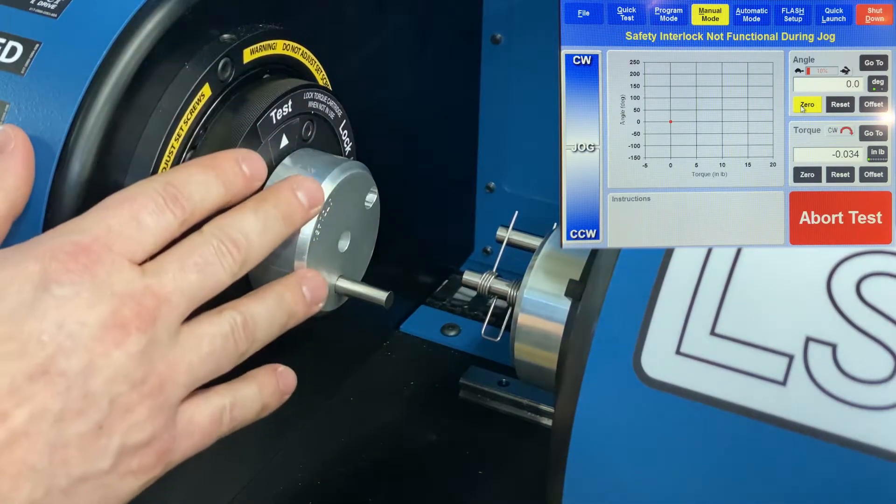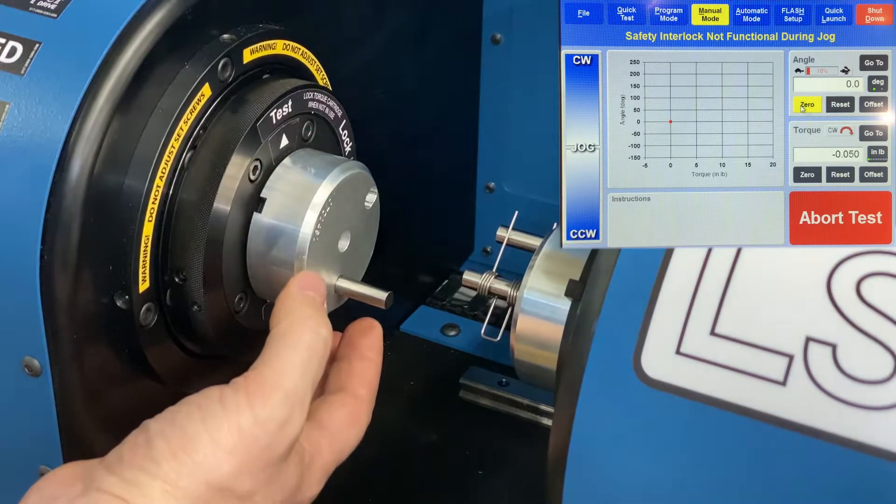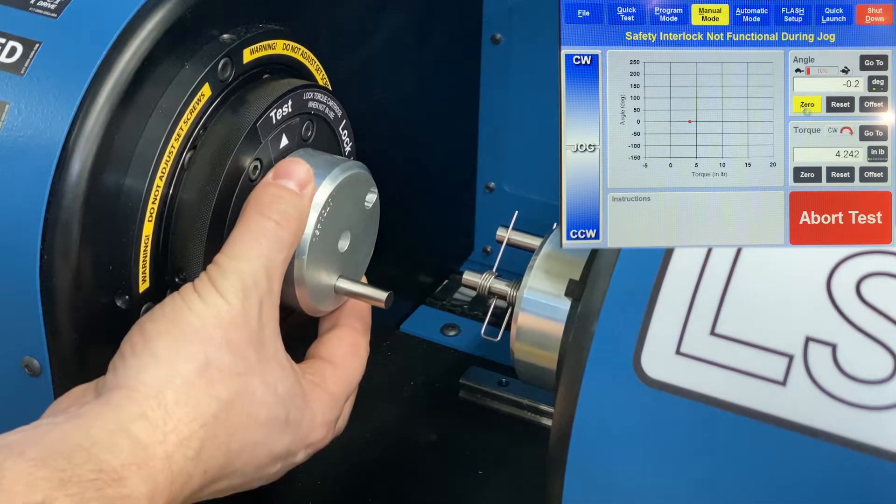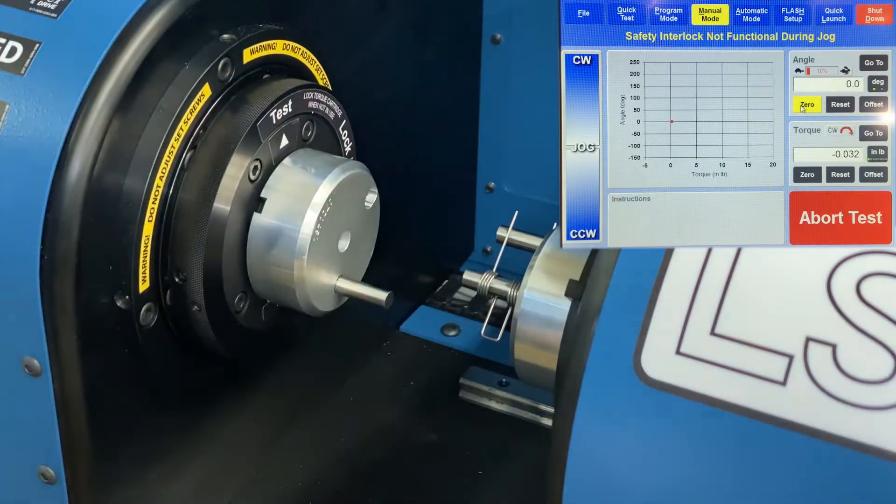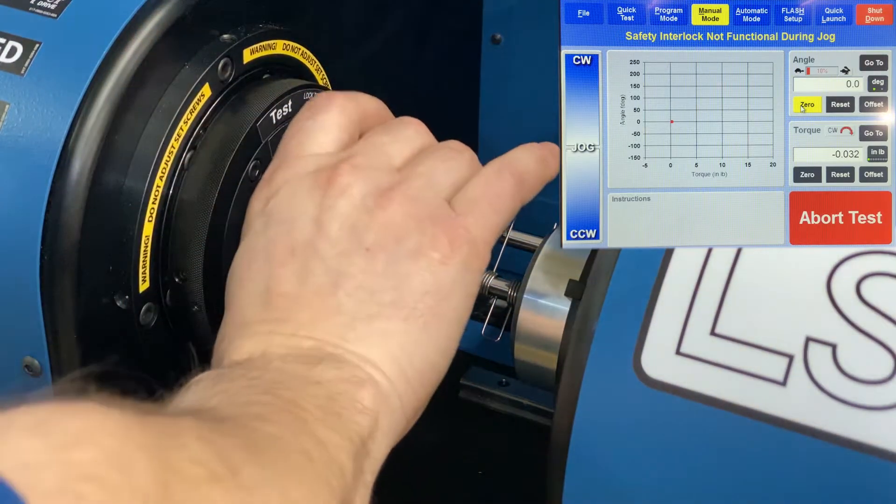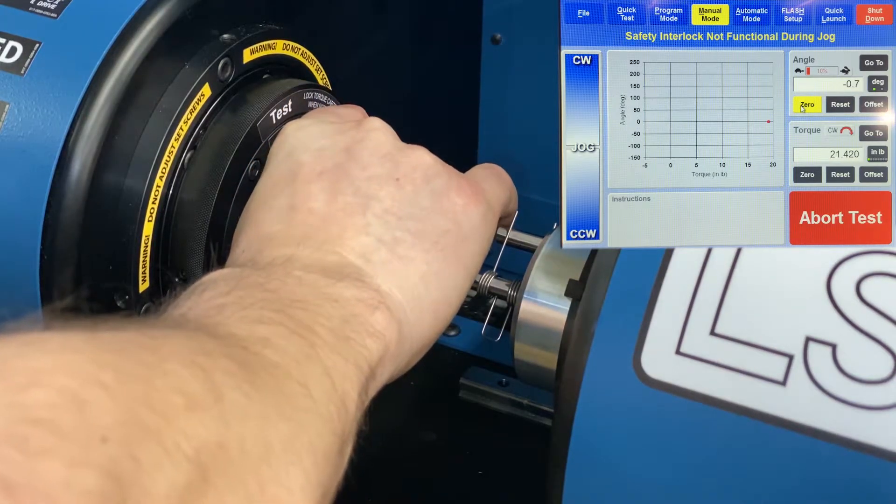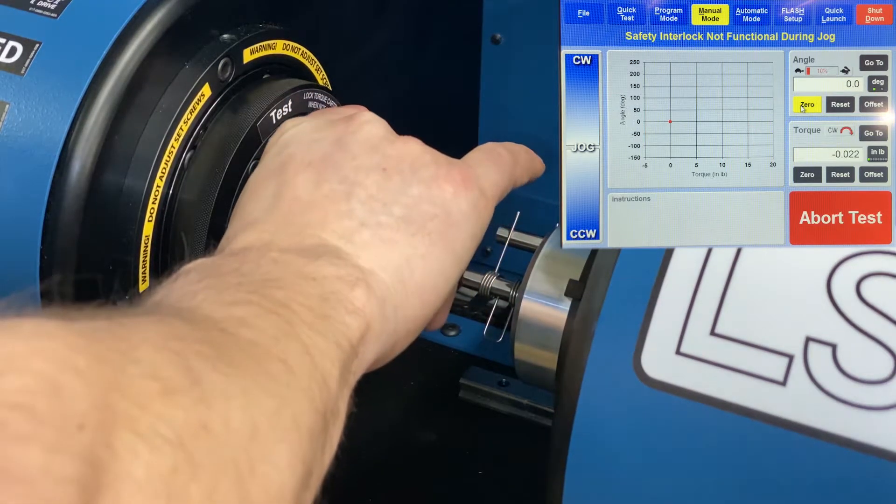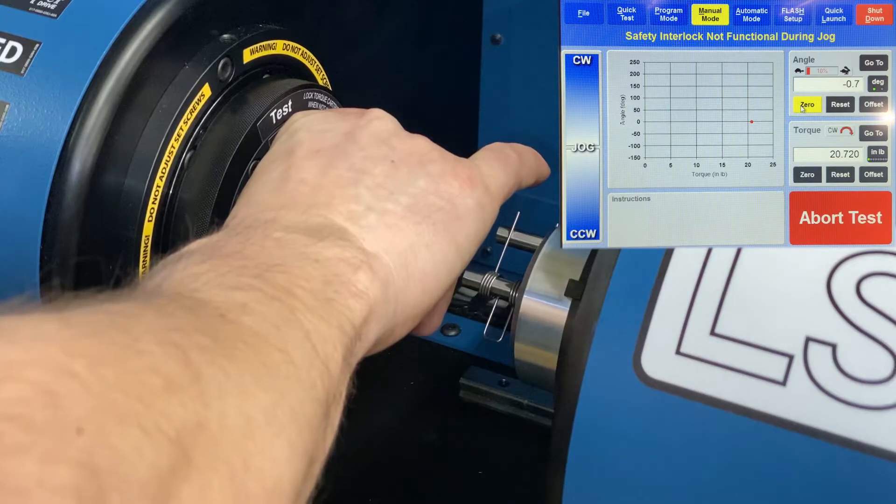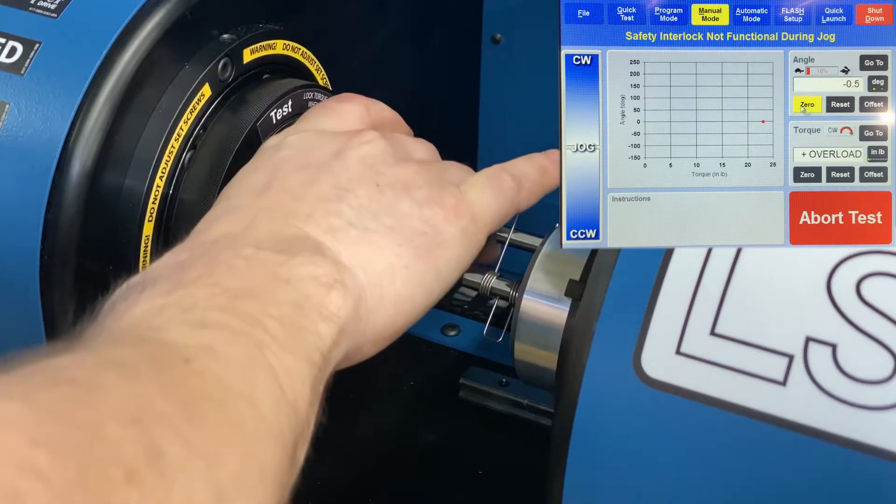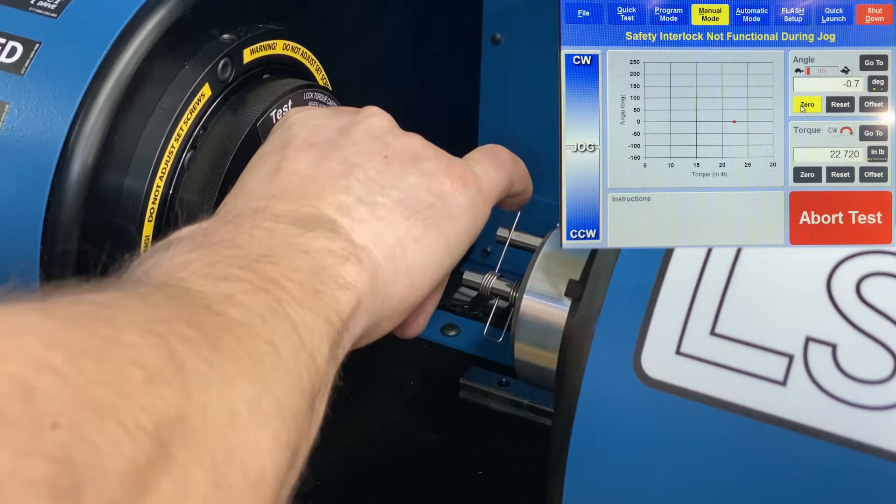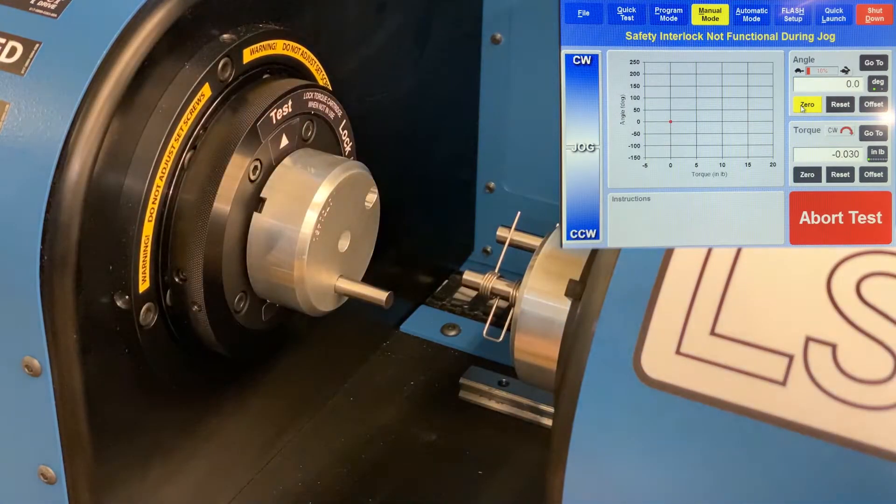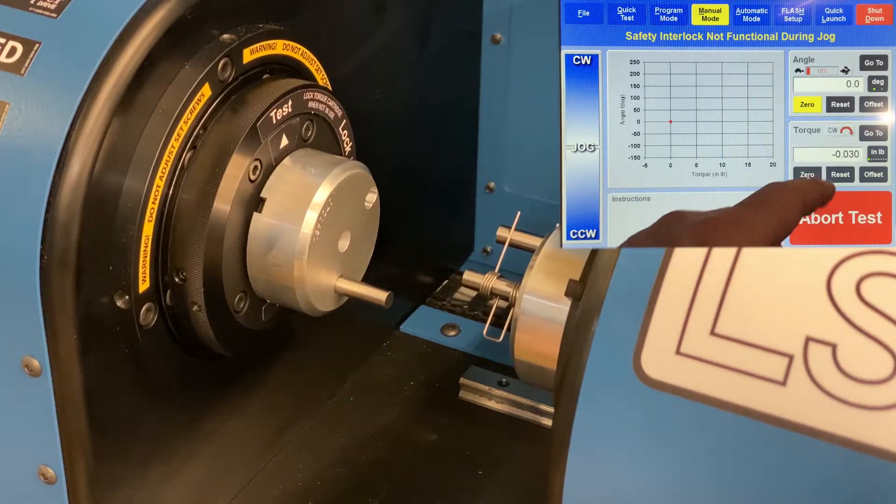Because this is only a 25 inch pound torque cell, I can actually manually exercise this using my hands, getting to 25 inch pounds three times to exercise that. One, two, three. And once it's done that, I can zero my torque.